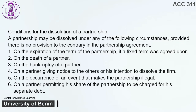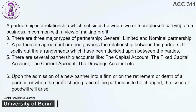Summary of Study Session 1. In this study session, please note the following: A partnership is a relationship that subsists between two or more people carrying on a business in common with a view of making a profit. There are three major types of partnership: general, limited, and nominal partnership. A partnership agreement or deed governs the relationship between the partners and spells out the arrangements decided upon between the parties. There are several partnership accounts like the capital account, the fixed capital account, the current account, the drawings account, etc. Upon the admission of a new partner, or on the retirement or death of a partner, or when the profit-sharing ratio is to be changed, the issue of goodwill will arise.